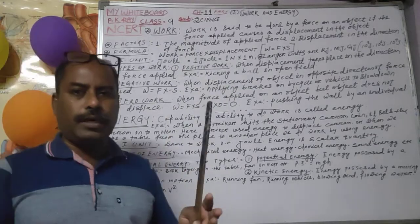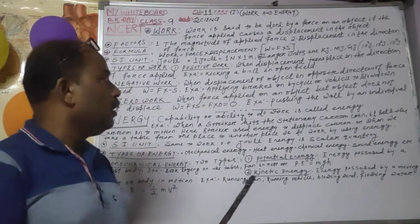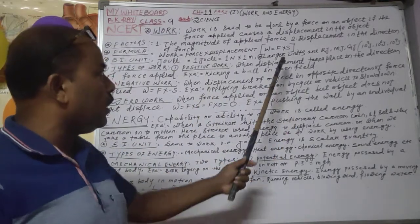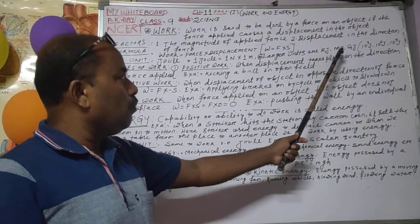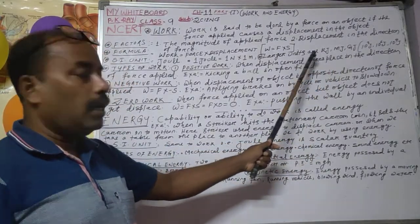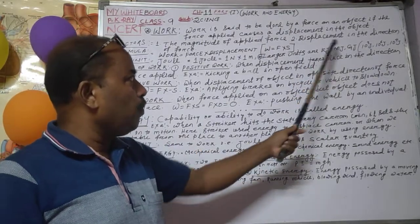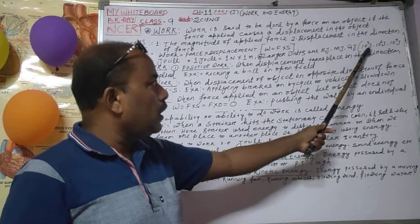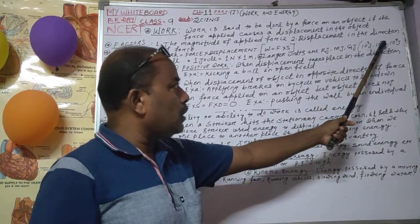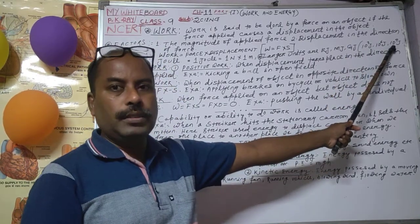SI unit means Standard International unit, which is applicable in international language. But sometimes we use larger units for work — kilojoule, megajoule, and gigajoule. One kilojoule is equal to 10 to the power 3 Joule. One megajoule is equal to 10 to the power 6 Joule. And one gigajoule is equal to 10 to the power 9 Joule.